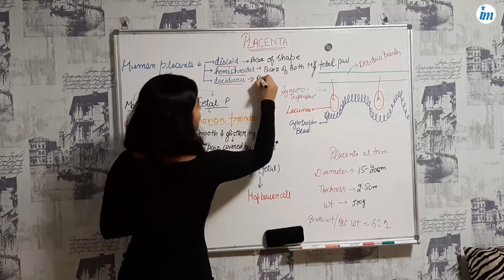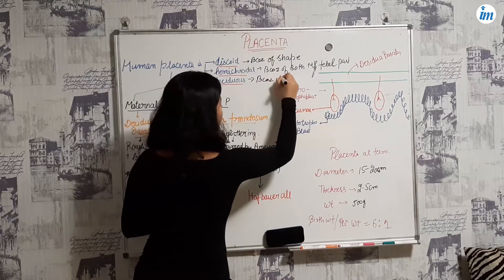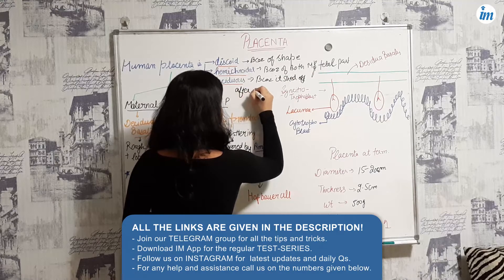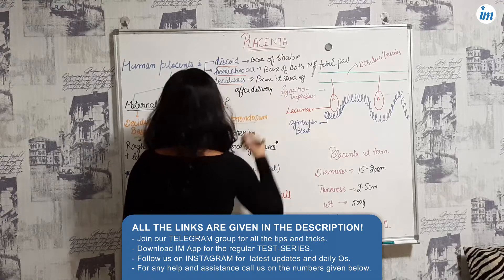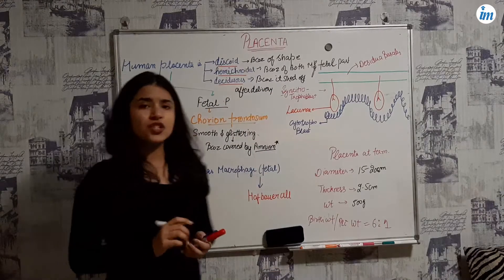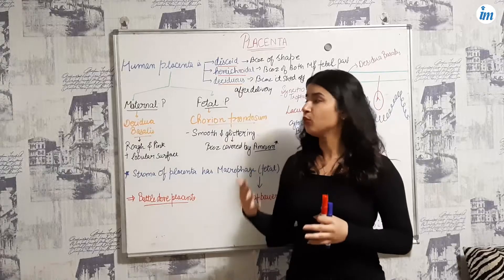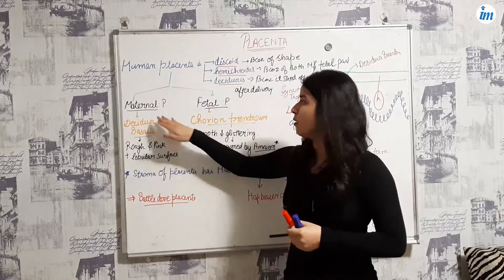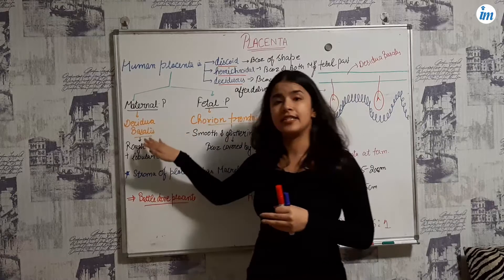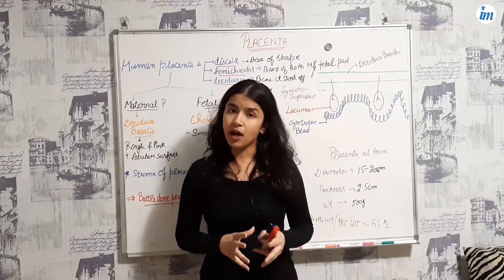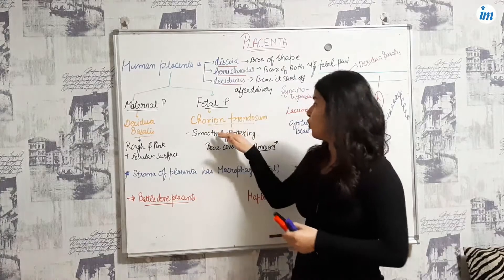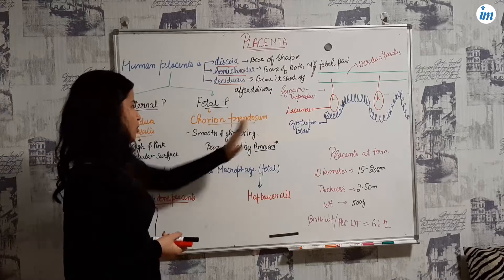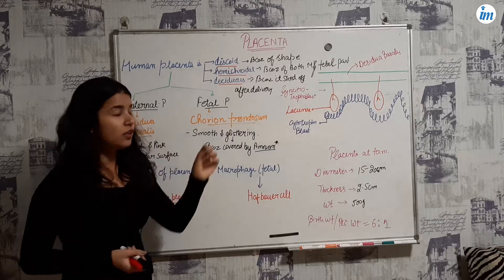The placenta has a maternal part and a fetal part. The maternal part is known as the decidua basalis, whereas the fetal part is known as the chorion frondosum — just remember chorion.